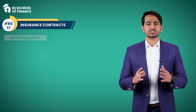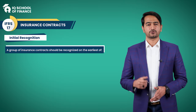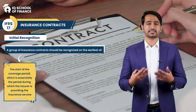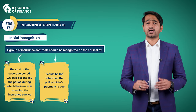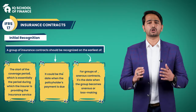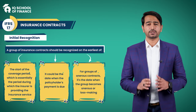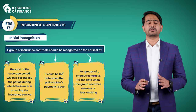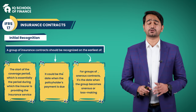Now let's discuss the initial recognition of insurance contracts. A group of insurance contracts should be recognized on the earliest of three dates: first, the start of the coverage period; second, the date when the policyholder's payment is due — or if no date is specified, when the first payment is actually received; and third, for a group of onerous contracts, the date when that group becomes onerous. Remember, the discussion is about groups of contracts, though the assessment for initial recognition is made individually for each contract within the group.